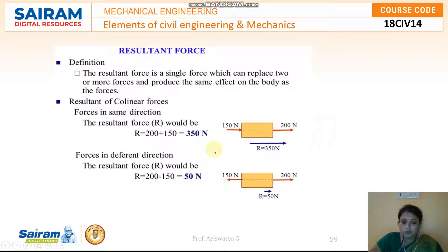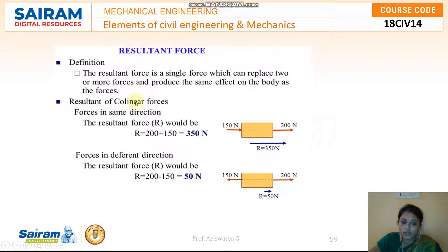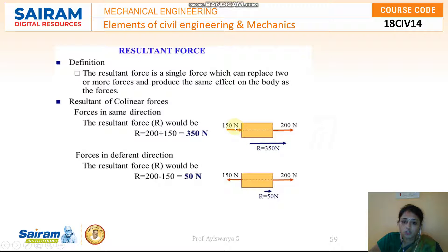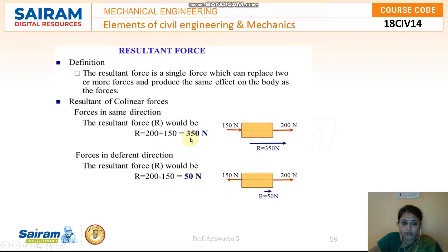Resultant force is a single force — not many forces, just one force — which can replace two or more forces and produce the same effect on the body. For example, if you have many forces acting on a body and you want to make it a single force, that single force is the resultant force. For example, with collinear forces in the same plane, you can see two forces on a block: 150 newton and 200 newton. R equals 150 + 200 = 350 newton.